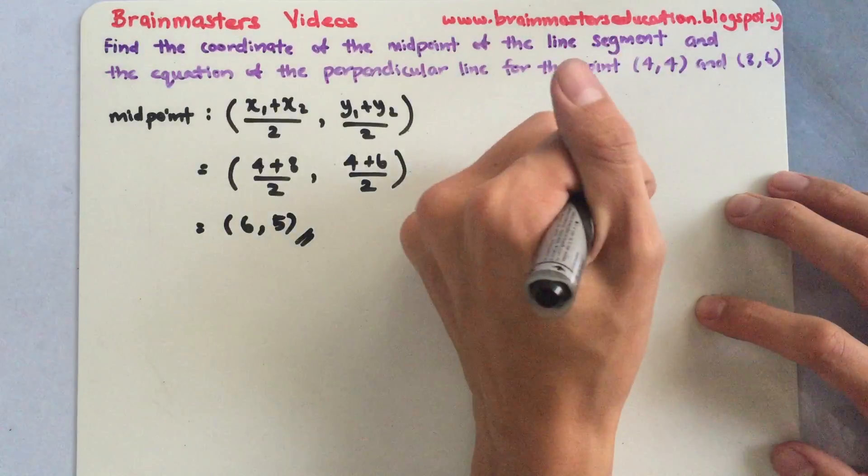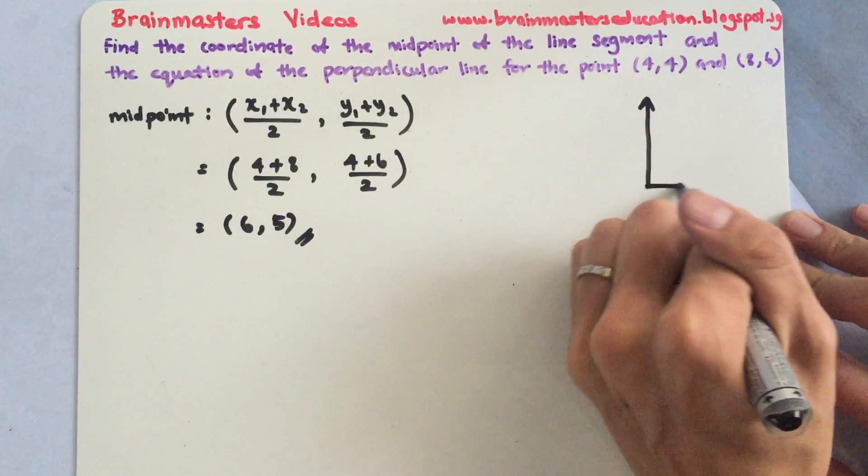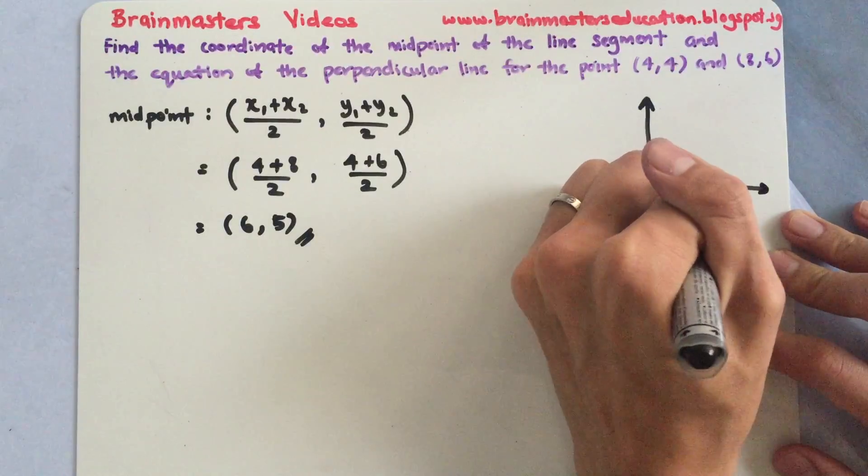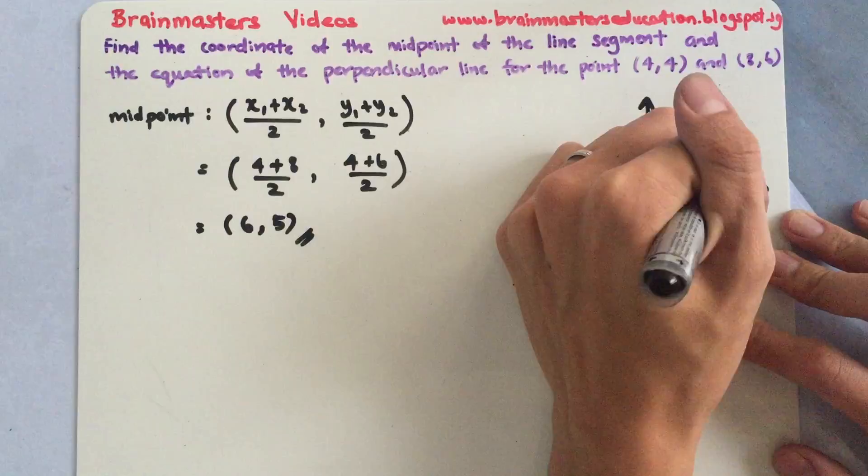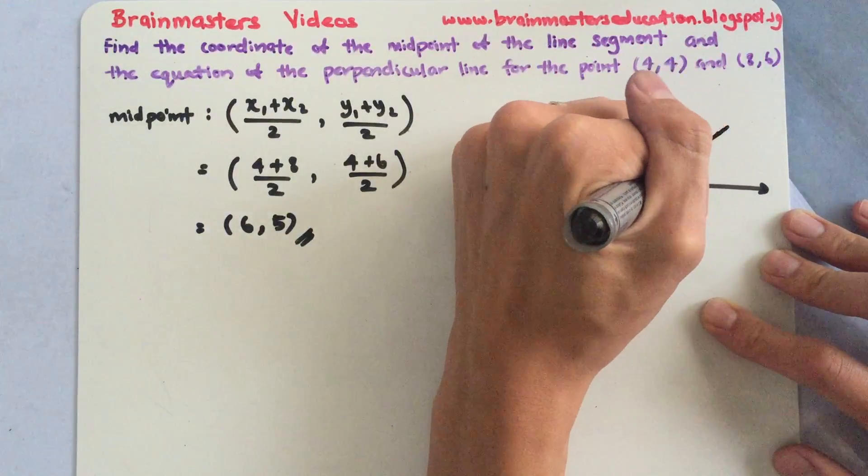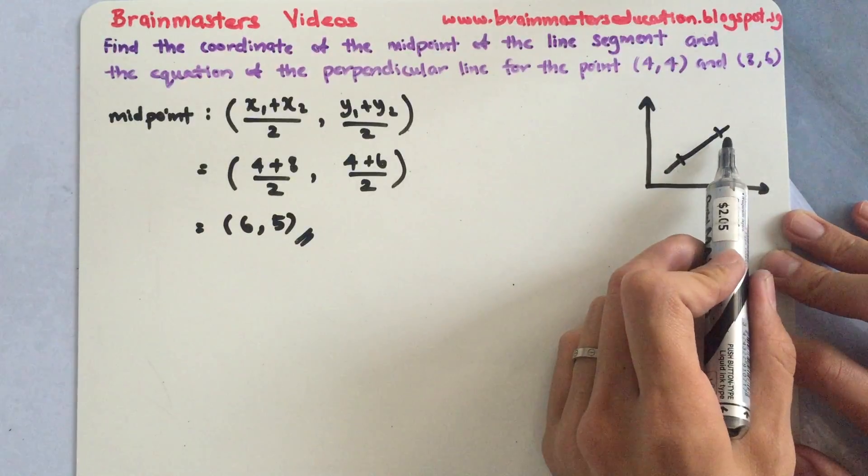Let's label our points on a graph. Let me just roughly draw a graph for you to see. So (4,4) may be somewhere here and then my (8,6) will be somewhere here. So this is how your graph will look like. This is the line actually. So here's the two points. (4,4) and (8,6).